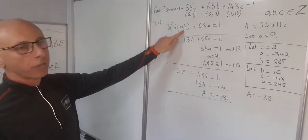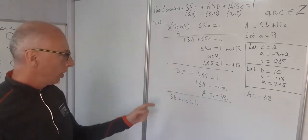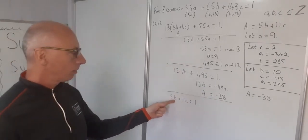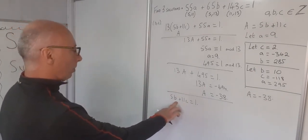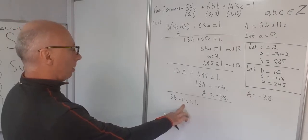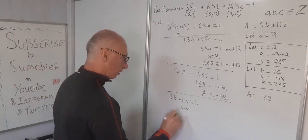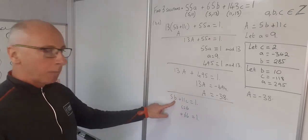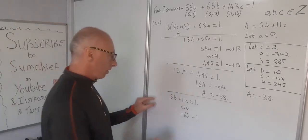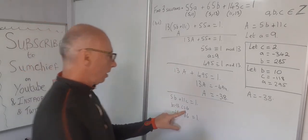Now what I'm looking for are solutions for 5B plus 11C equals 1. We know there's a positive B with negative C and a negative B with positive C. Let C equal 6, so 5B plus 66 equals 1. My B is going to be a negative value, so let B equal minus 13. So minus 65 plus 66 equals 1. So B equals minus 13, C equals 6.